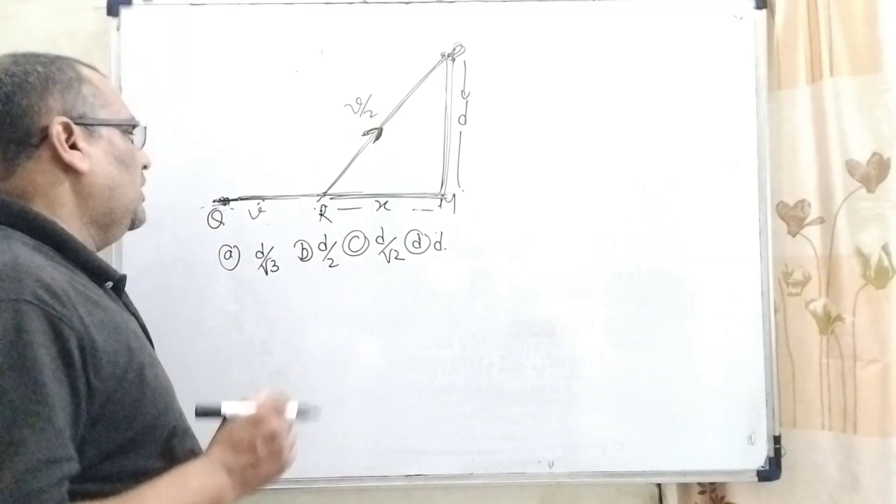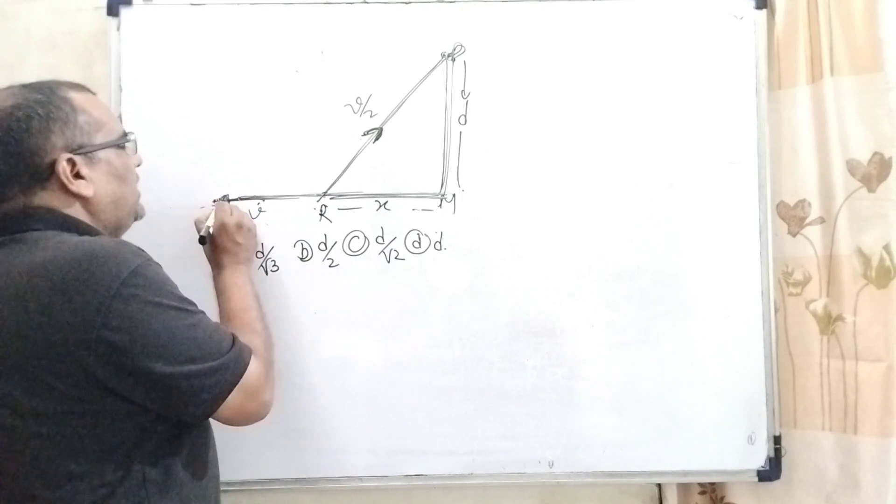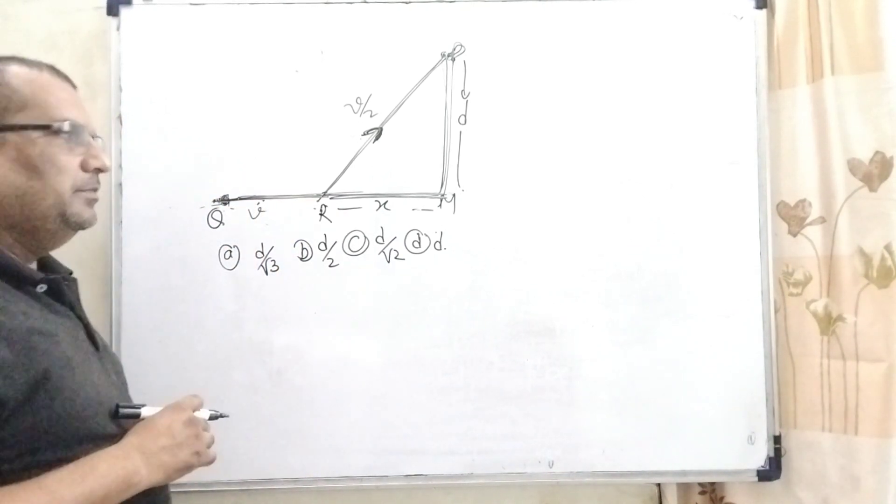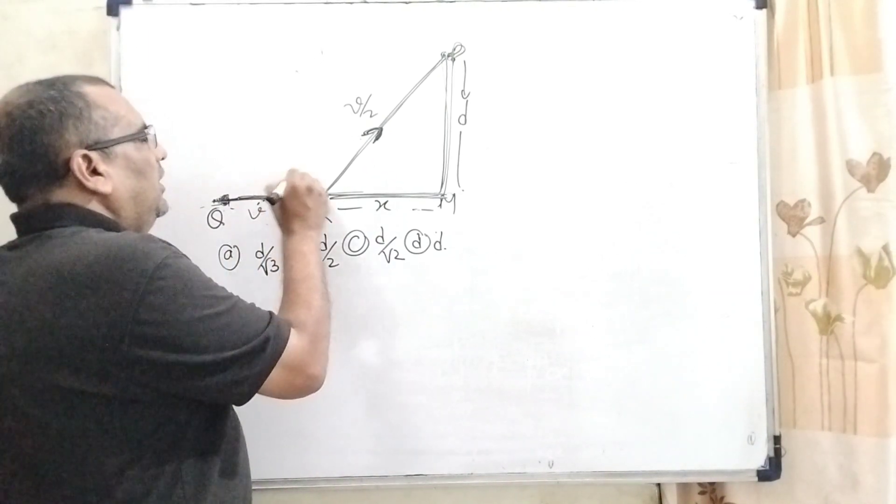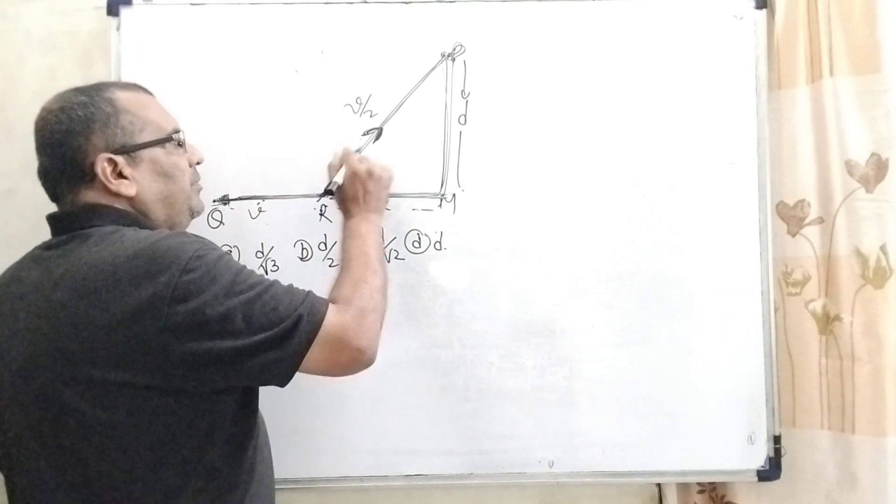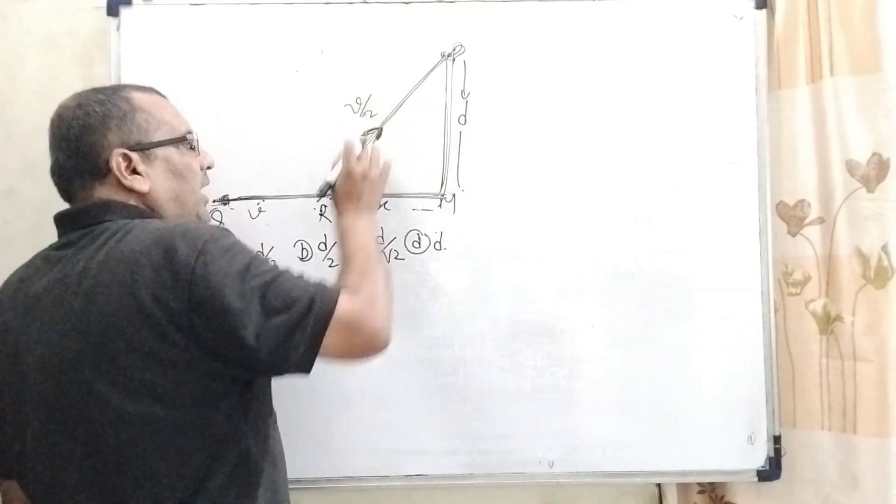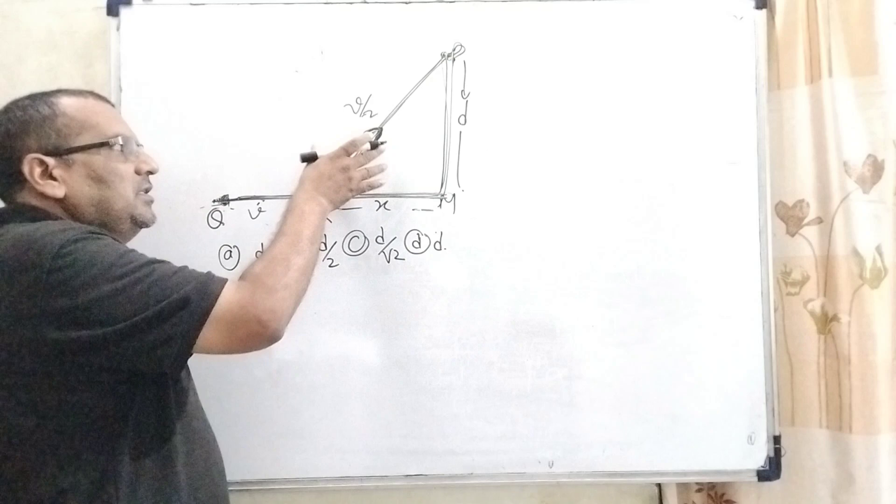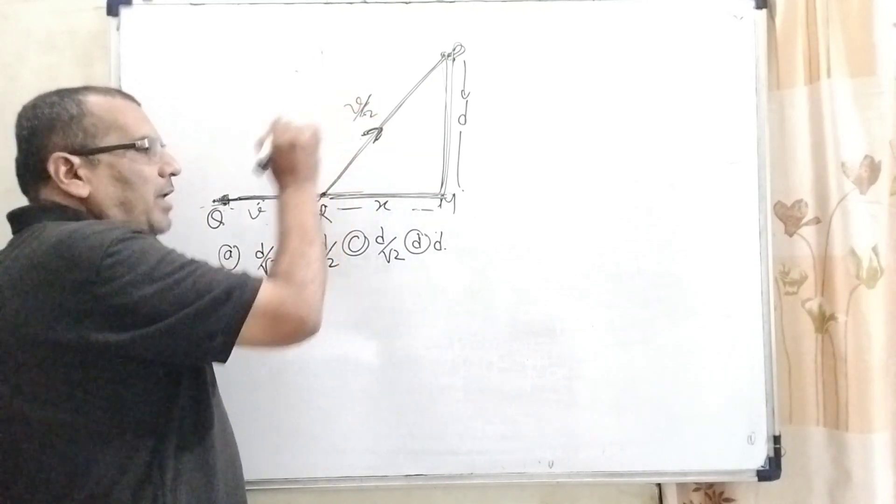Now in this question, it is asked that a man travels from Q to R with velocity V. And here, the time minimum required to reach P. If he travels out of the road, means in the field, then velocity becomes V by 2. So here we have to find out RM, when he turns into the field.